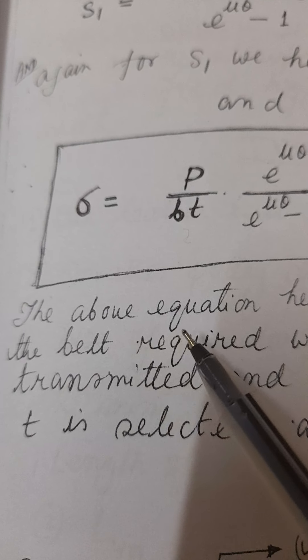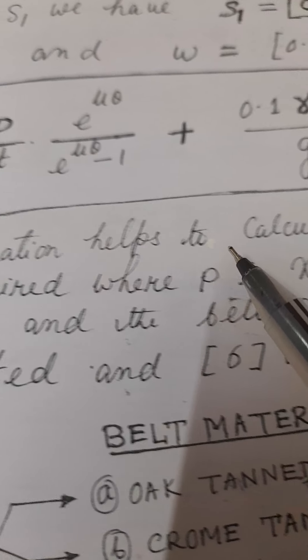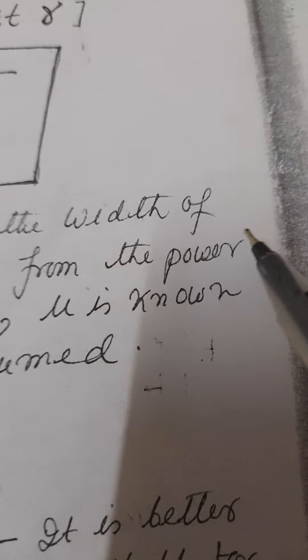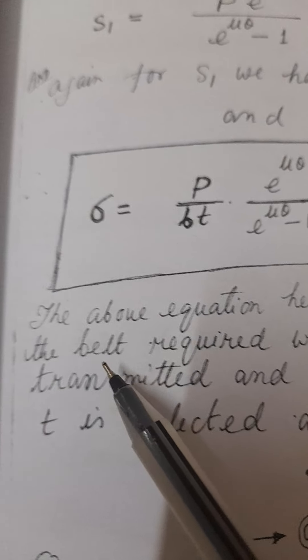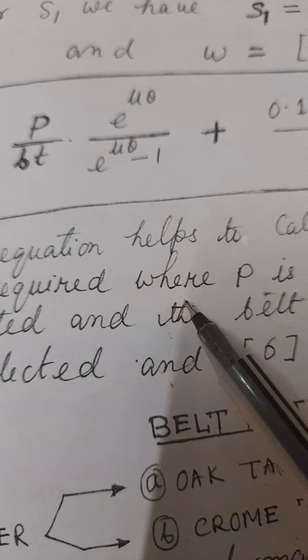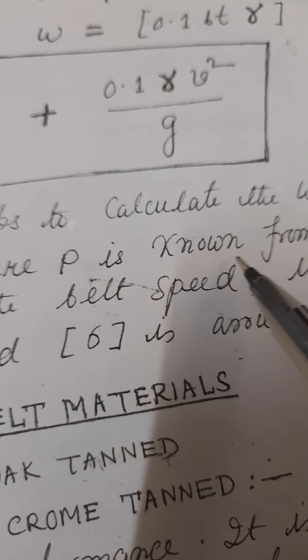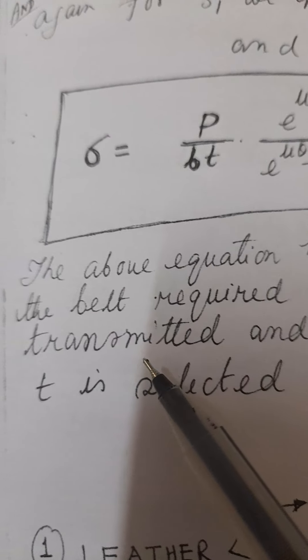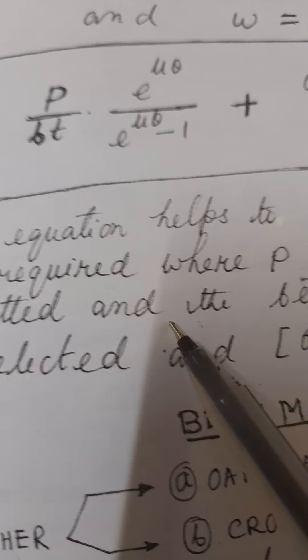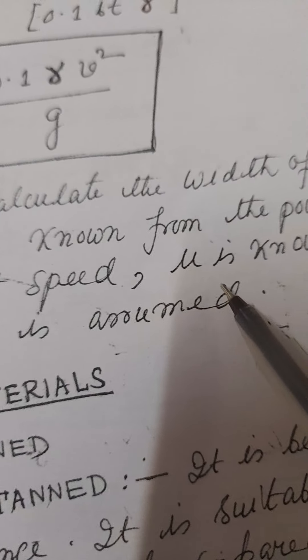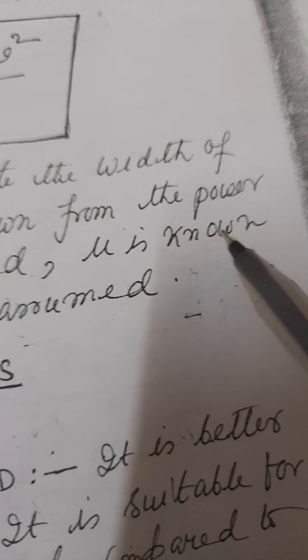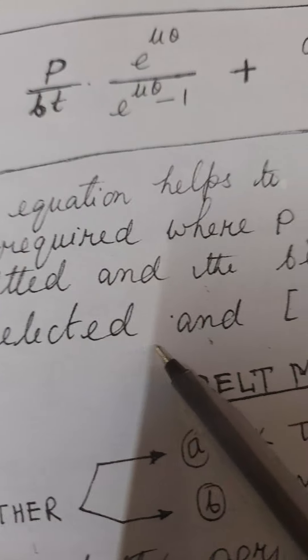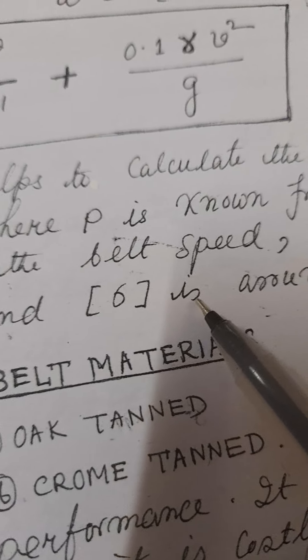The above equation helps to calculate the width of the belt required, where P is known from the power transmitted and the belt speed, mu is the friction coefficient, t is selected, and sigma is assumed.